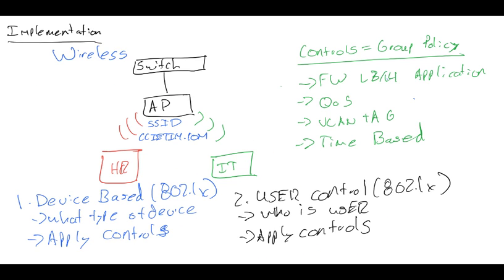So for wireless network access control, I see two typical scenarios. First is device-based authentication or control. So the device would connect to the network via 802.1x. We would determine what type of device it is, and based upon that device, we would apply a control.